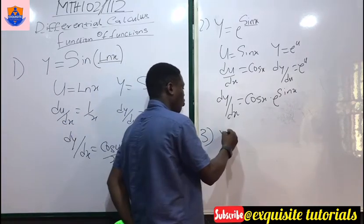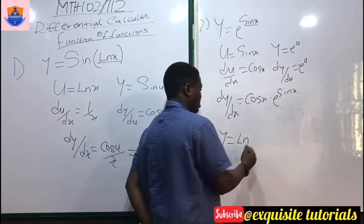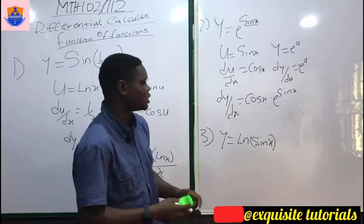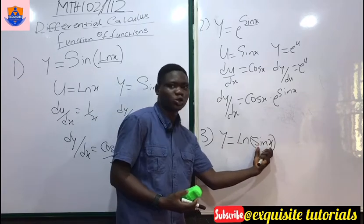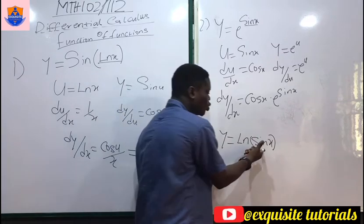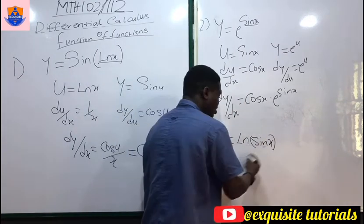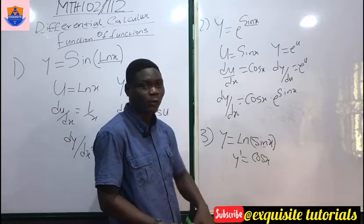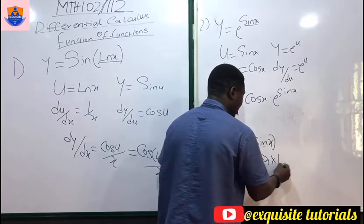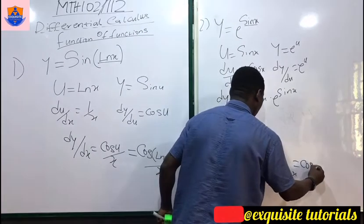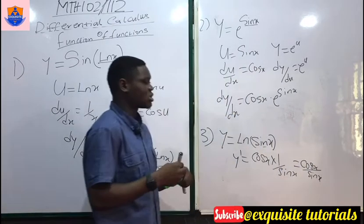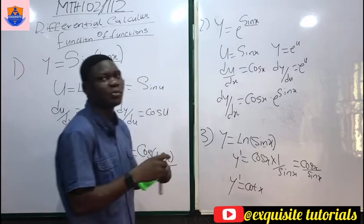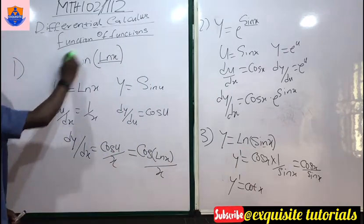Let's do another example: y = ln(sin x). When differentiating a logarithmic function you get one over that function times the derivative of the inside. Differentiating sin x gives cos x, so you have cos x / sin x. Since cos x / sin x = cot x, y' = cot x.